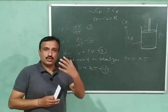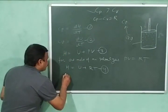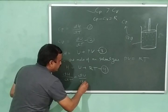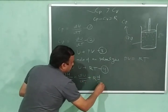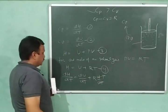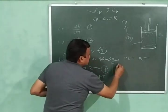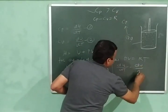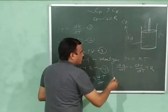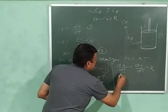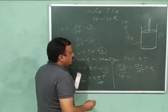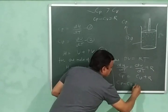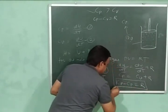Now I will differentiate equation four with respect to temperature. dH/dT equals dU/dT plus R times d/dT of T, which simplifies to dH/dT equals dU/dT plus R. Since dH/dT is CP and dU/dT is CV, we get CP equals CV plus R, and therefore CP minus CV equals R. This is the required relationship.